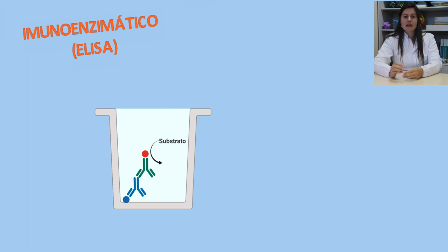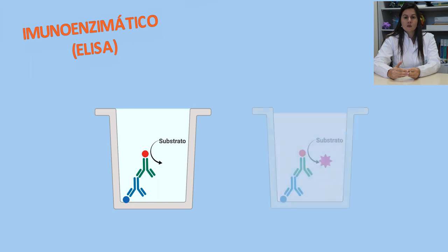A reação da enzima que está ligada a um anticorpo com o seu substrato, que é ligado a um cromógeno, gera uma alteração de cor na reação. E essa variação de cor é lida para a obtenção do resultado.